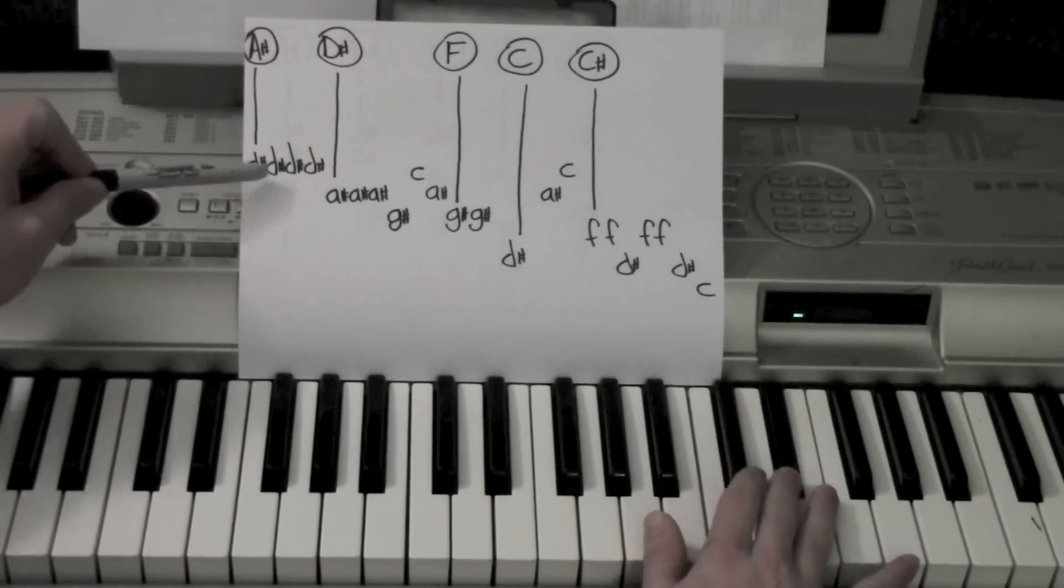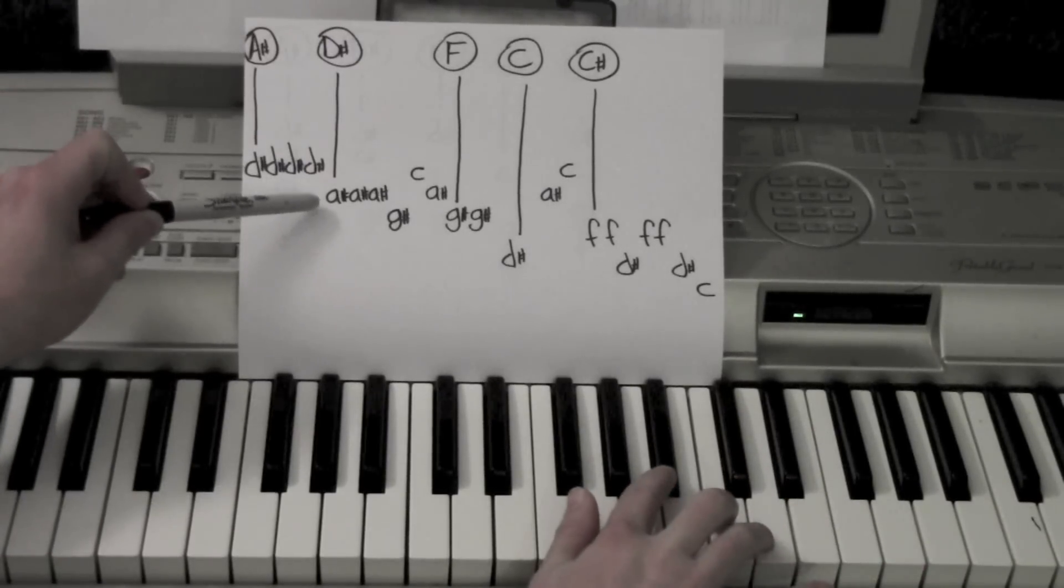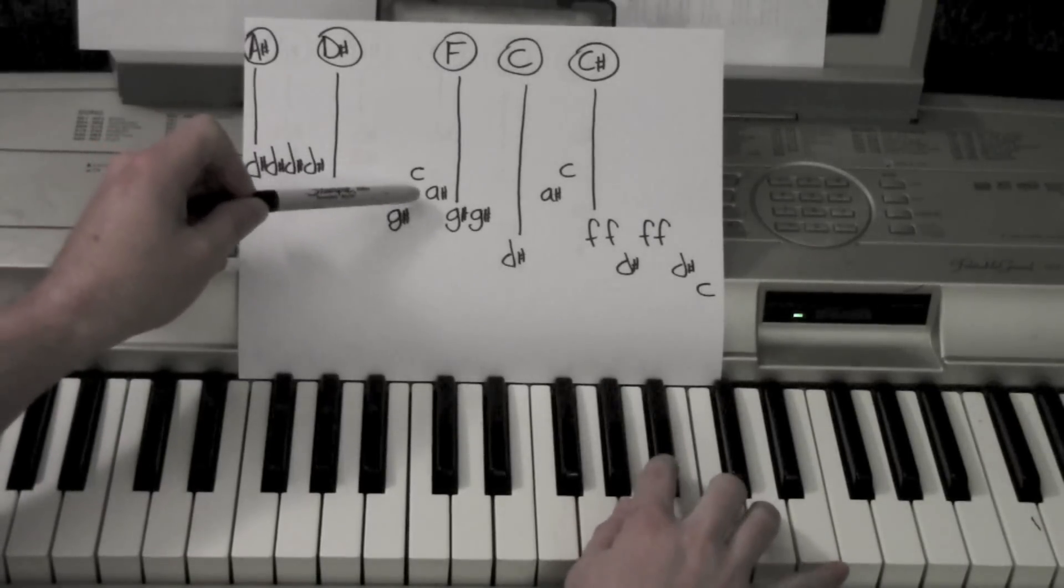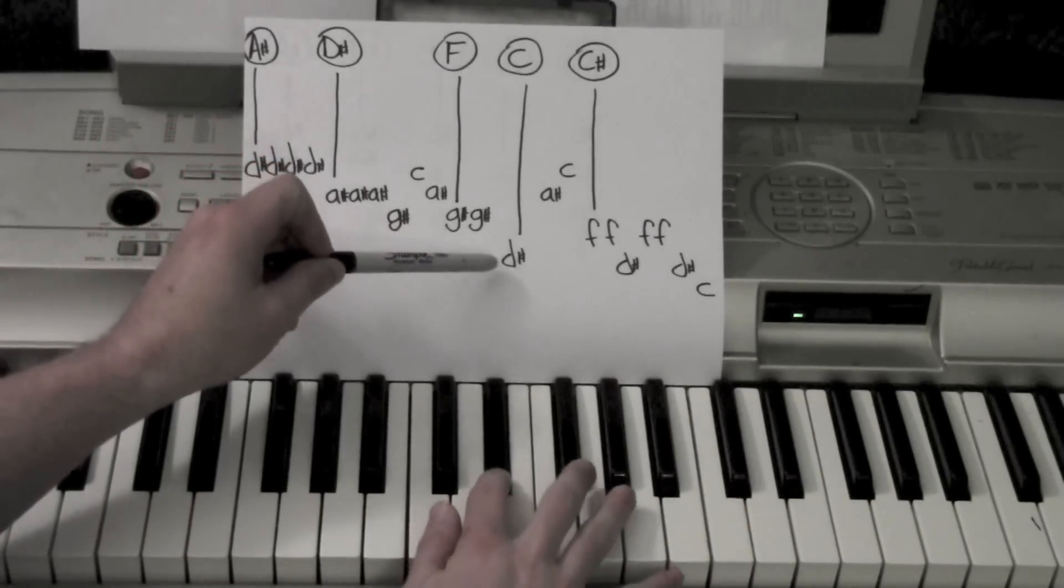Okay, so I'm starting from a D-sharp, 1, 2, 3, 4, then to an A-sharp, 1, 2, 3, G-sharp, C, A-sharp, G-sharp, D-sharp.